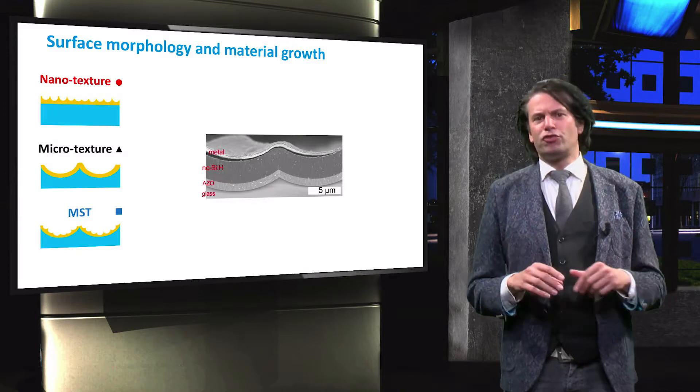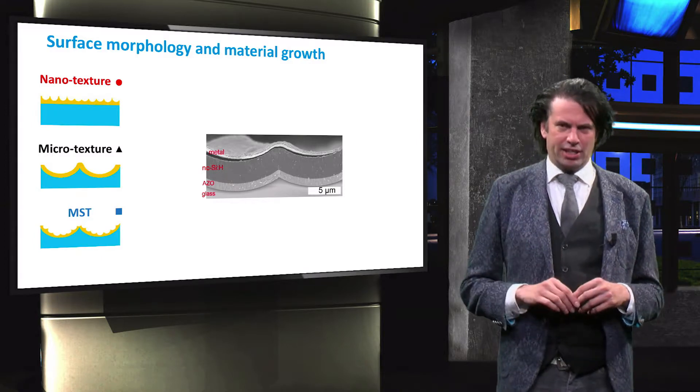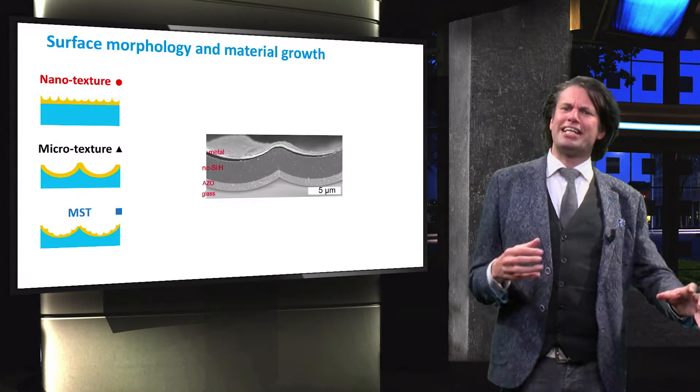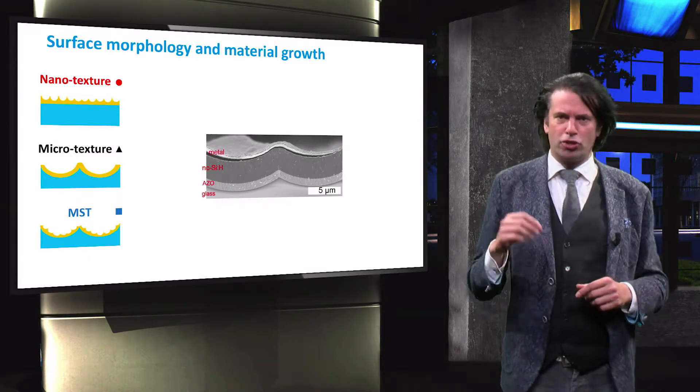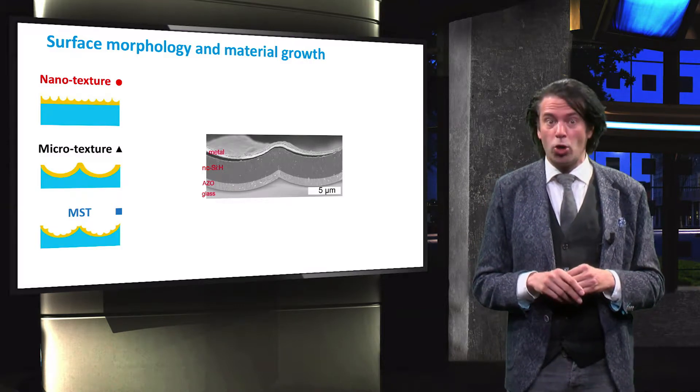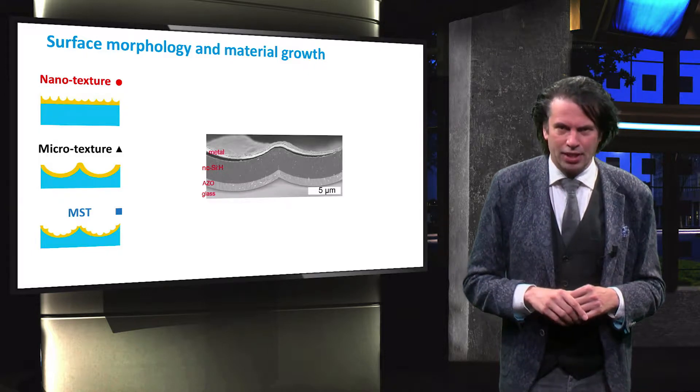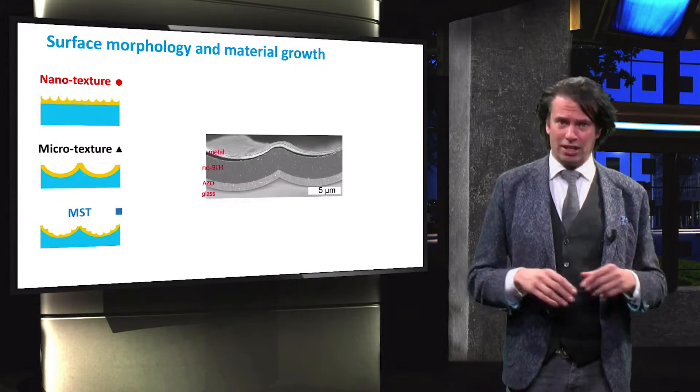The cross-section of the solar cells provides some insights. This figure shows the nanocrystalline silicon absorber deposited on top of the microtextured aluminum-doped zinc oxide layer. The cell is covered by a metal electrode.